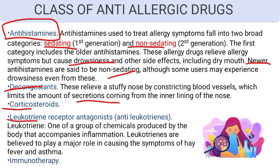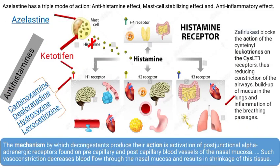Corticosteroids and leukotriene receptor antagonists, also called anti-leukotrienes, are also used. Leukotrienes are a group of chemicals produced by the body that accompany inflammation. They are believed to play a major role in causing the symptoms of hay fever and asthma. Immunotherapy is also classified as an anti-allergic drug.